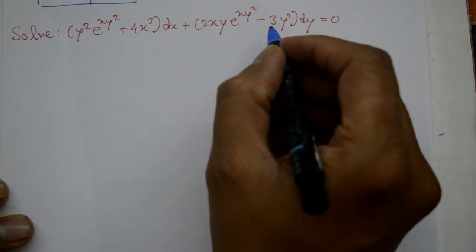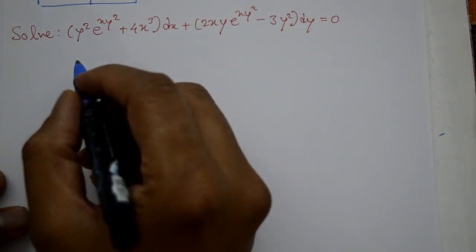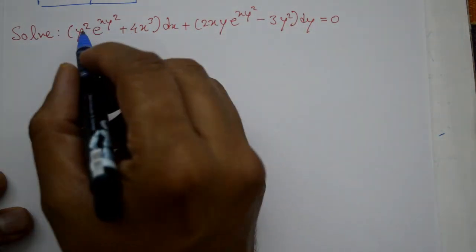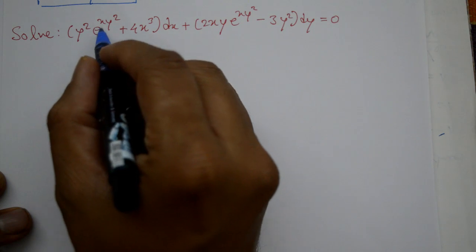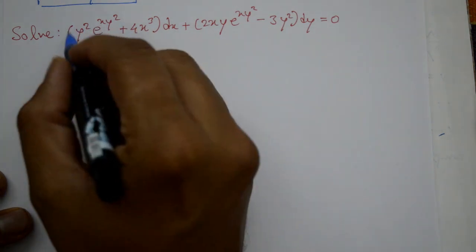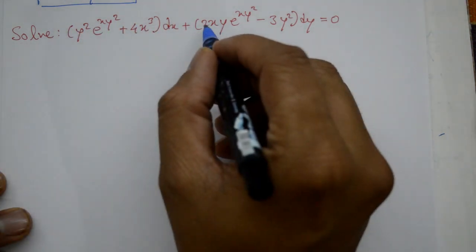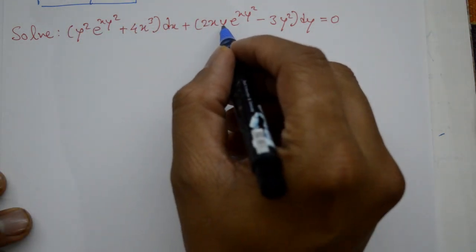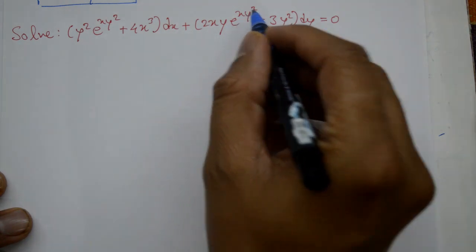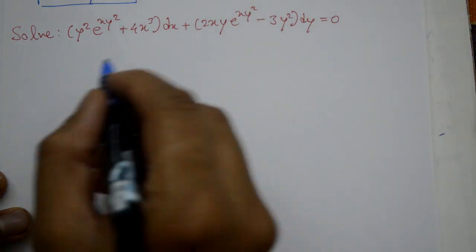Welcome friends, is problem ko solve karenge, iska solution am ni karenge. Solve: y² · e^(xy²) + 4x³ dx + 2xy · e^(xy²) − 3y² dy = 0.